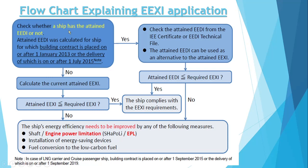As I have told you earlier, this is the flowchart explaining the EXI. It tells us that if your attained EDI — which is calculated for the ship built up to 2013 — if your attained EDI is equal to the attained EXI, meaning it is maintaining the requirement of the required EXI, then your attained EDI will work as the attained EXI and the ship complies with the EXI requirement. But if your attained EDI is not complying with the EXI requirement, you have to follow a different procedure, such as engine power limitation, which we have seen in earlier videos.